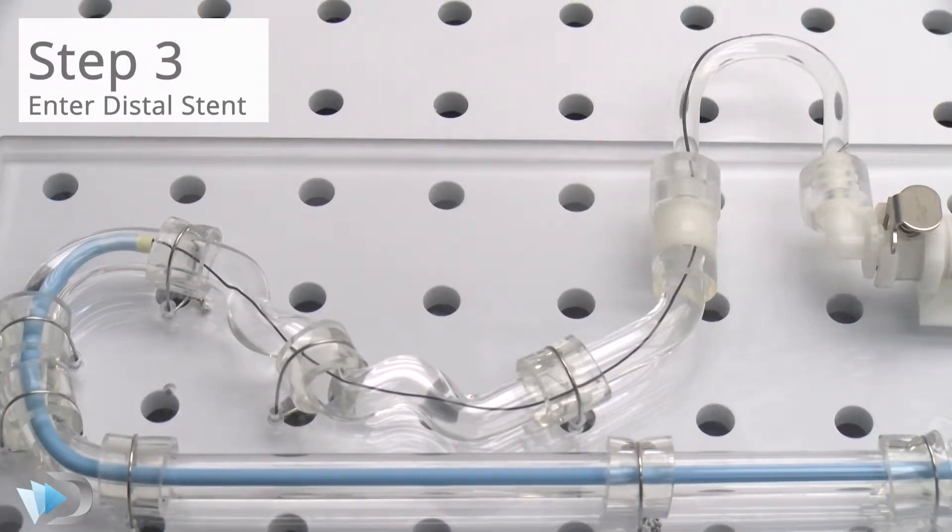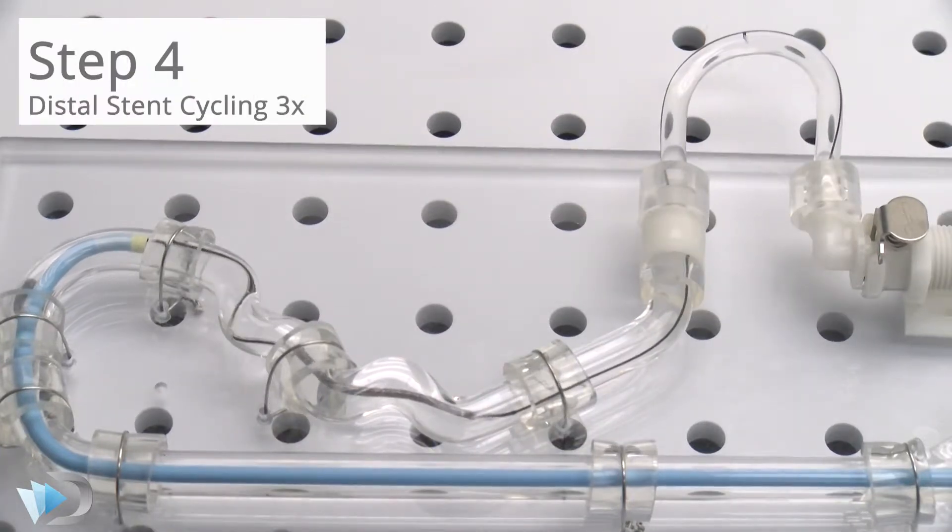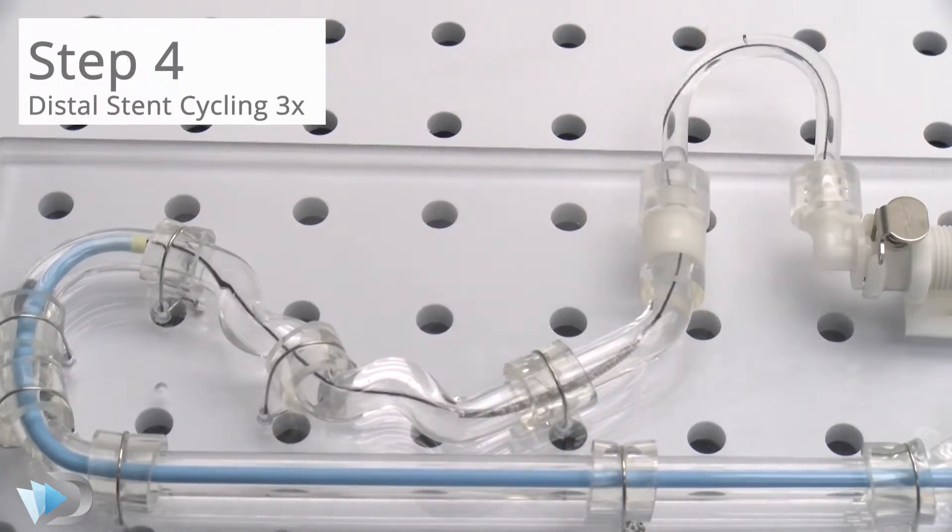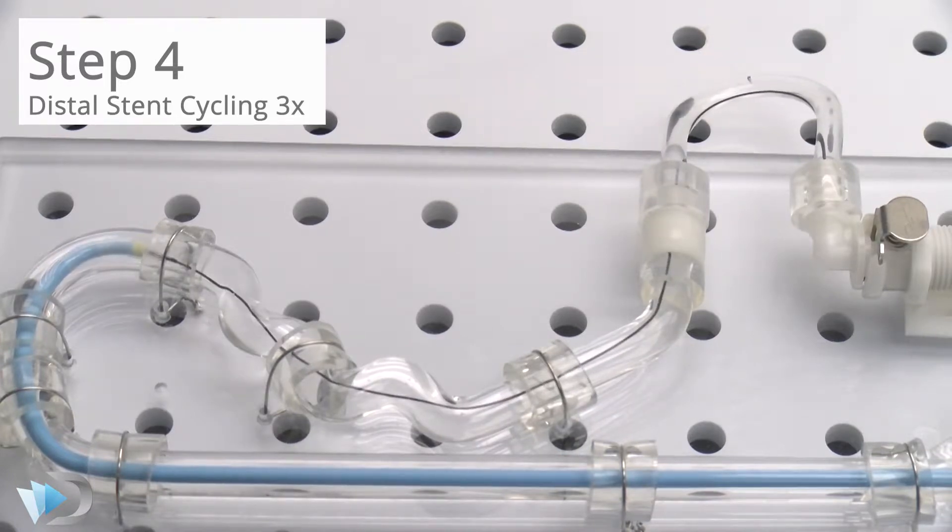Next, the distal stent is inserted to the end of the guide catheter. The stent is tracked through a tortuous path three times and then advanced to the distal portion of a curved mock vessel.